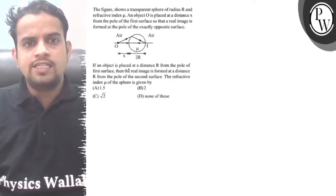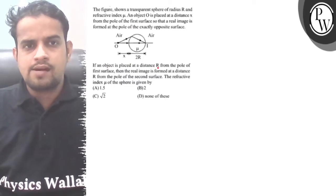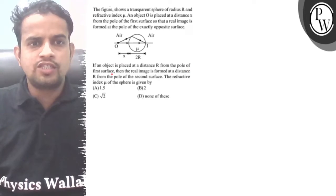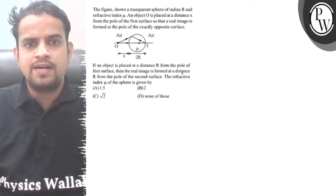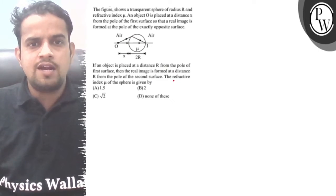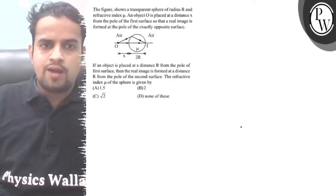If an object is placed at a distance r from the pole of the first surface, then the real image is formed at a distance r from the pole of the second surface. The refractive index mu of the sphere is given by... let me draw a new diagram.